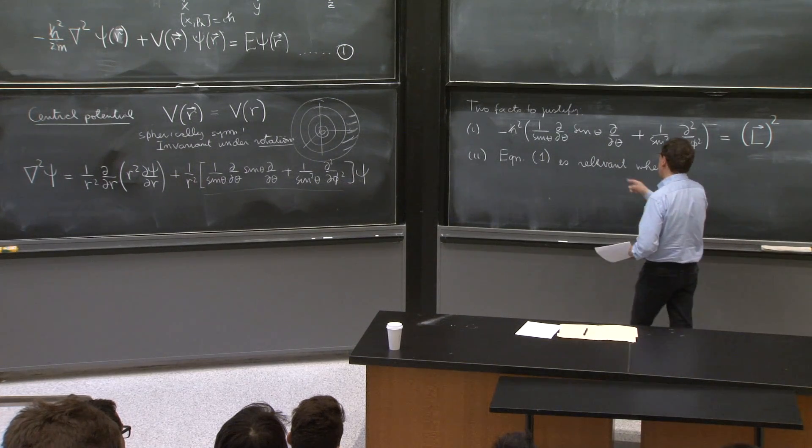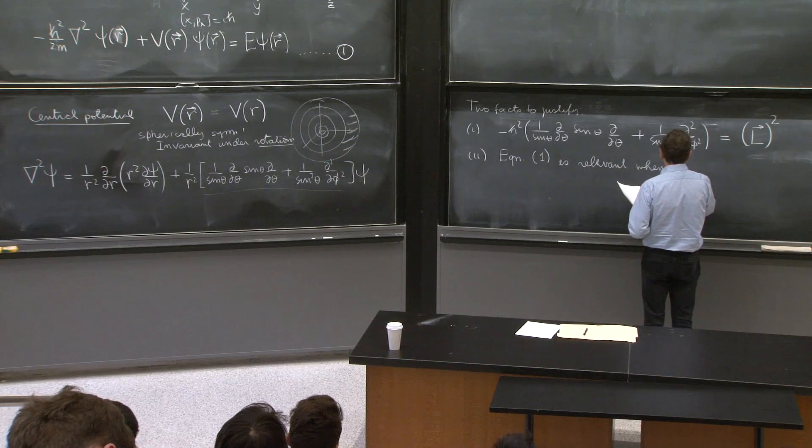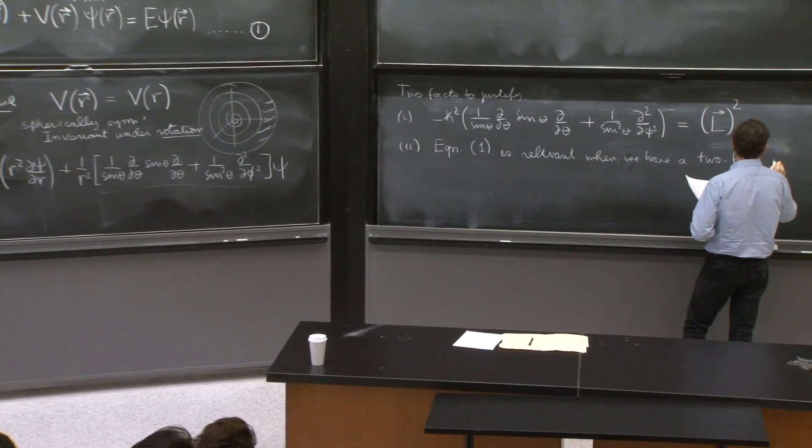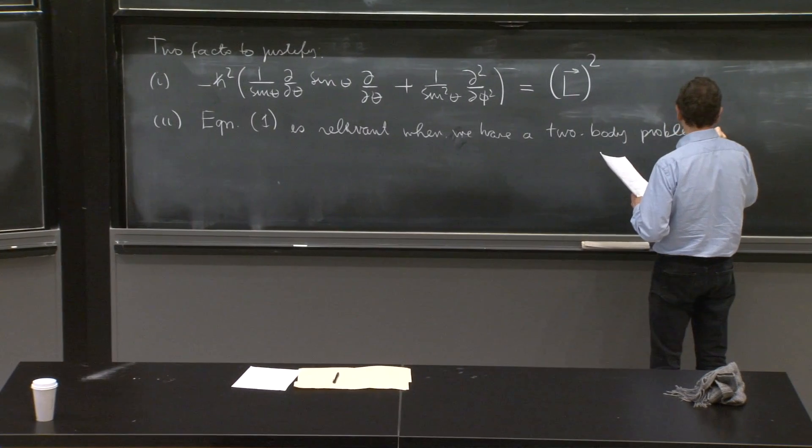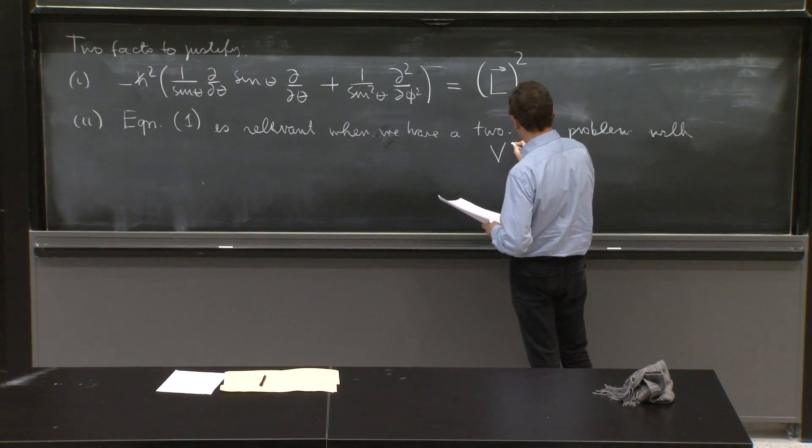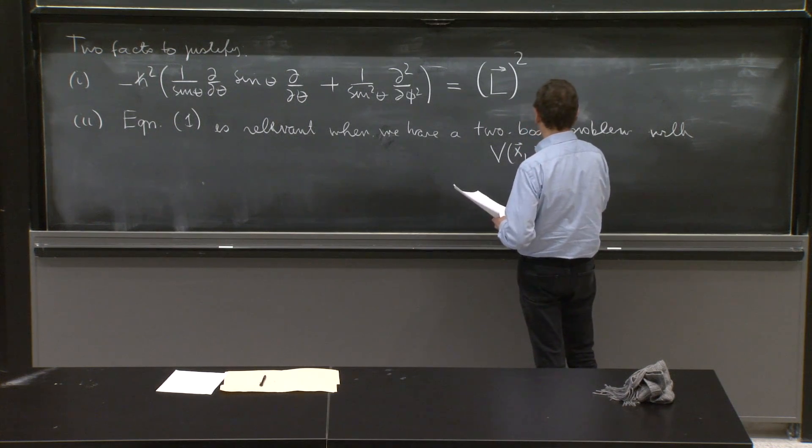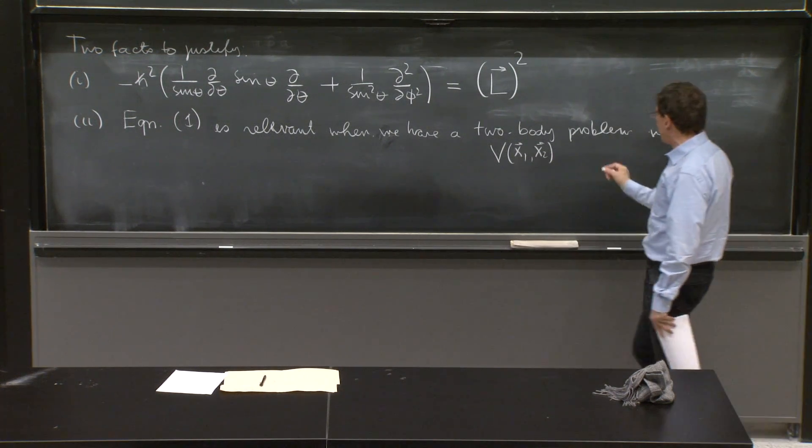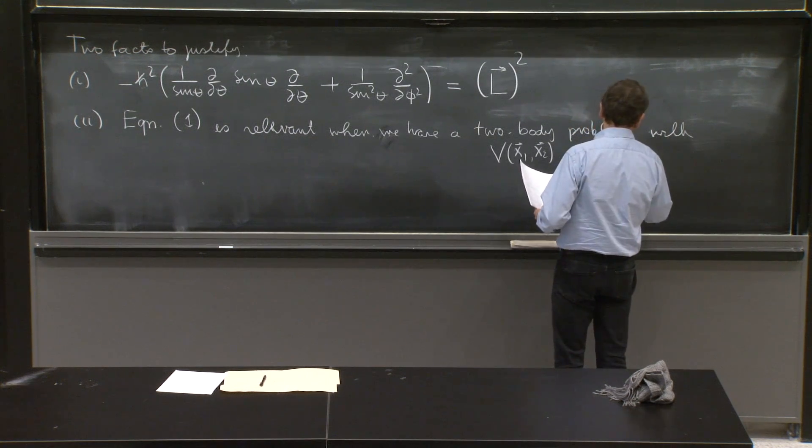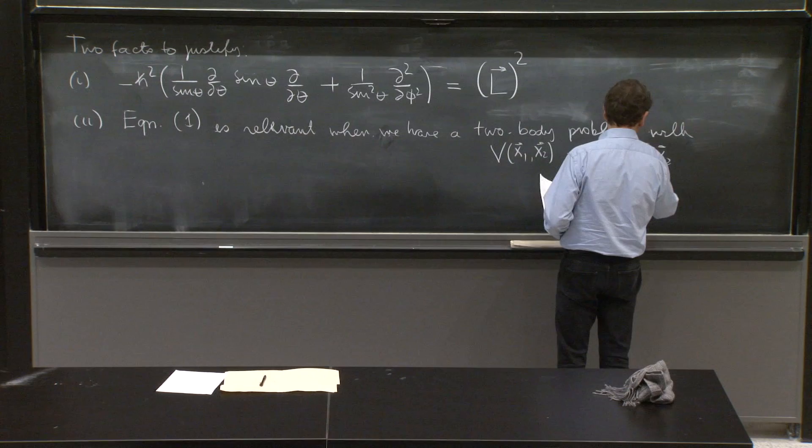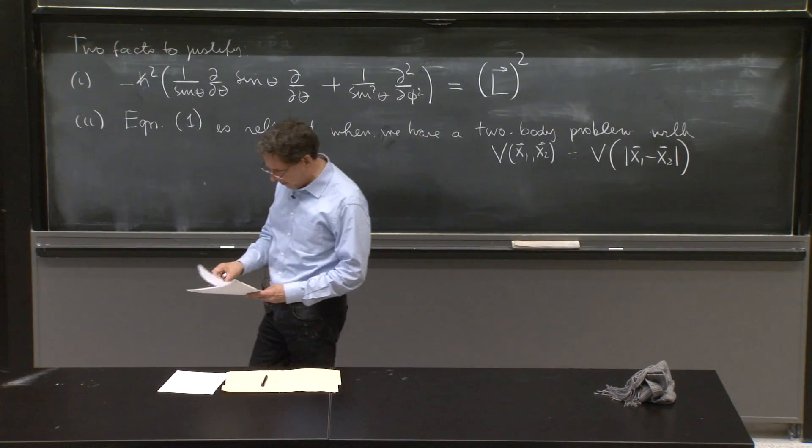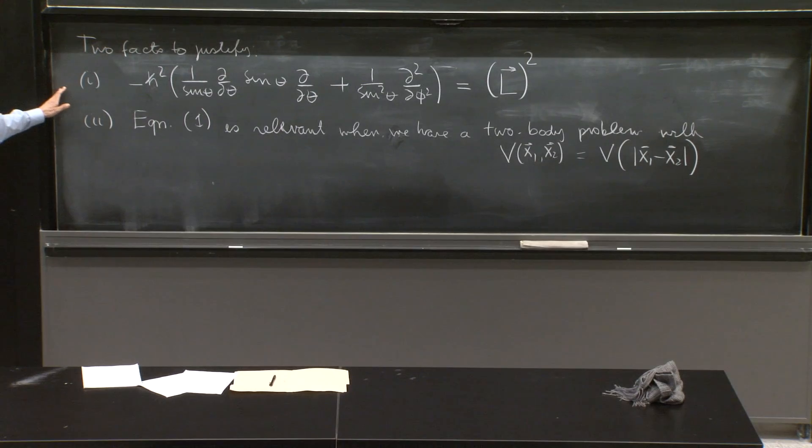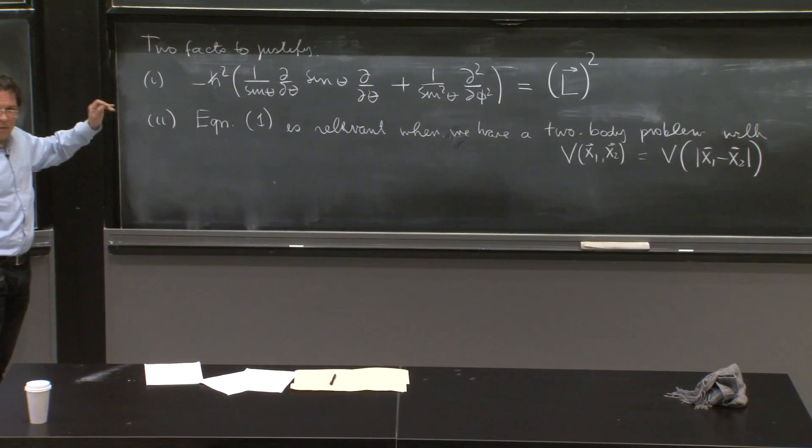So we need to somehow explain that as well. If you really want to understand what's going on, is that equation one is relevant when we have a two-body problem, with a potential function v of x1, x2. The potential energy given a configuration x1 and x2 of the first and second particle is a function of the separation only, the absolute value or the length of the vector x1 minus x2. This far, we'll get to today. This will be next lecture still.